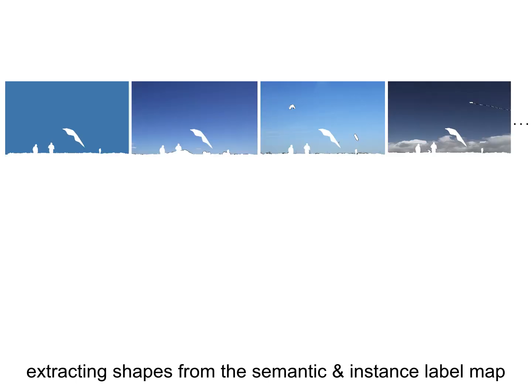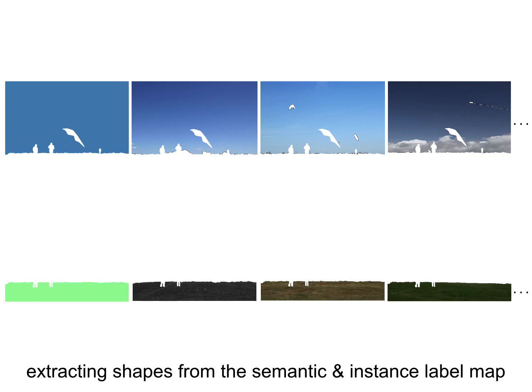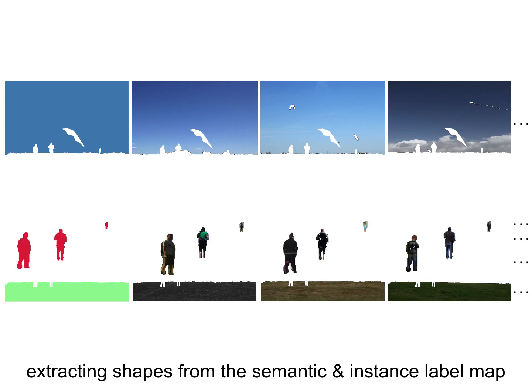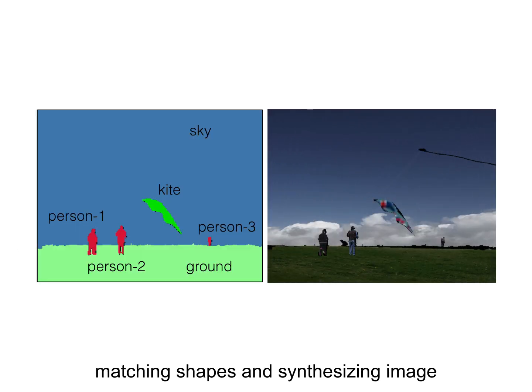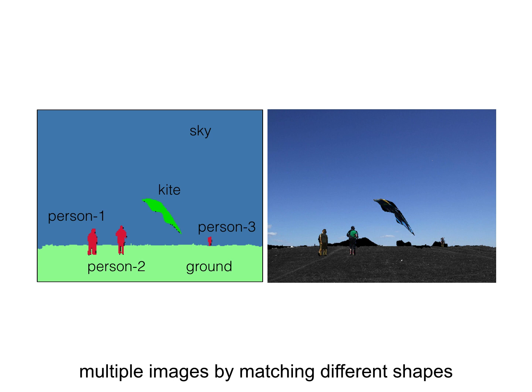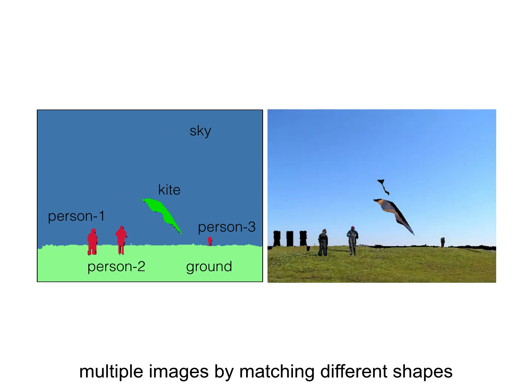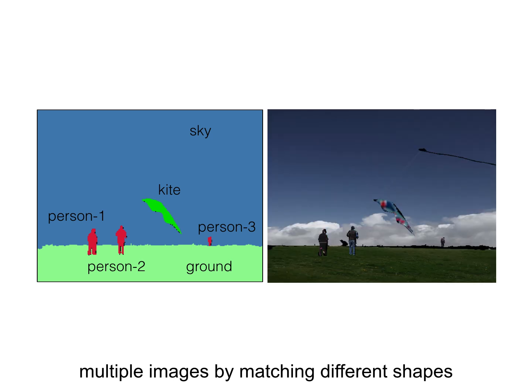We can extract different shapes from our input and find relevant matches by simple correlation of shapes in the shortlisted set of exemplar image matches. As an example, we can get different sky components, ground, person, person 2, person 3, kite, etc. A simple assembly of these components gives us a new image. Importantly, multiple outputs can be easily generated by mixing and matching these components.